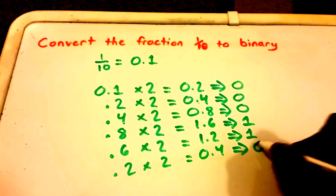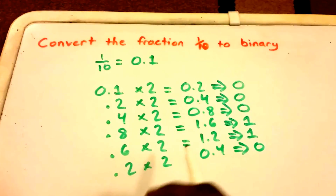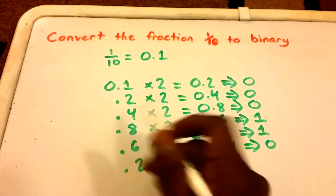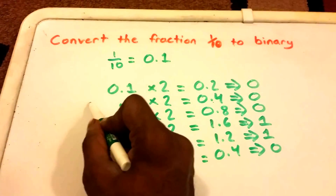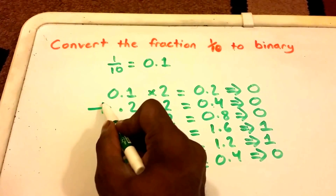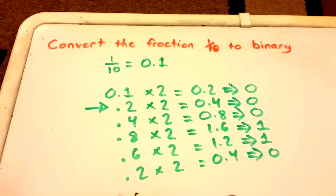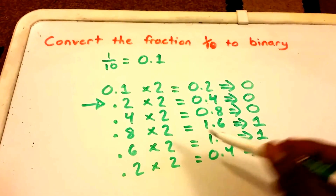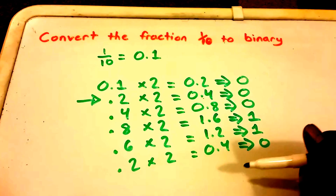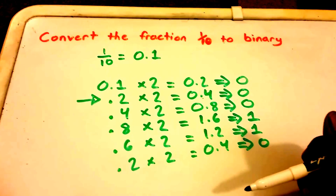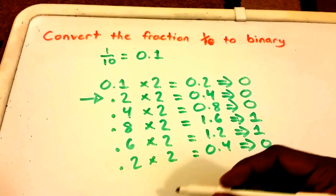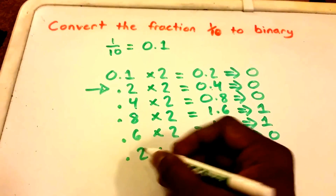Then we take the 0.2, multiply it by 2, and we get 0.4. We record the digit in front of the decimal point, which is 0. You might notice here that we've seen this before — it's looking like our binary number will be repeating itself.